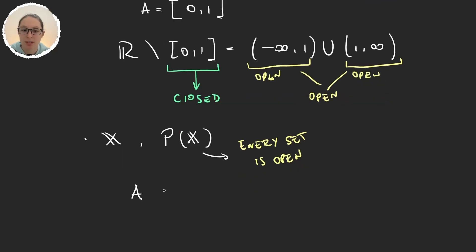But if I take any set A subset of X, if I want to see if A is closed I would have to do X minus A. But because we are in the parts of X topology then X minus A is obviously in parts of X. So this tells us because the complement is an open set then A is closed.